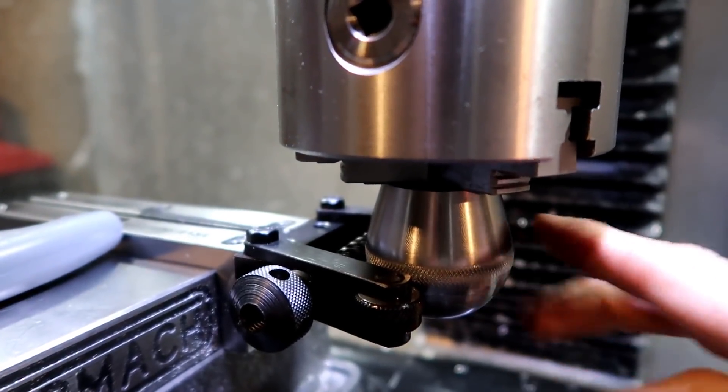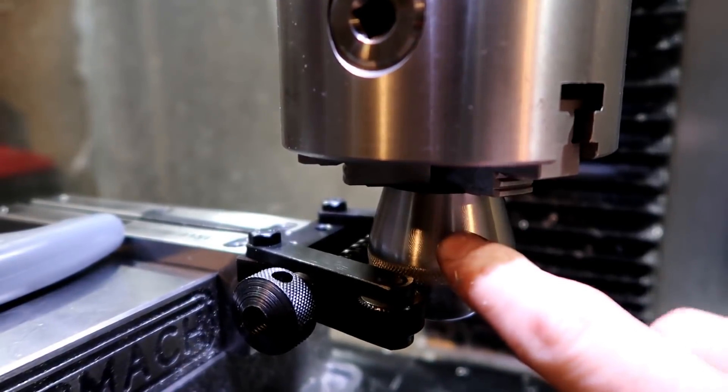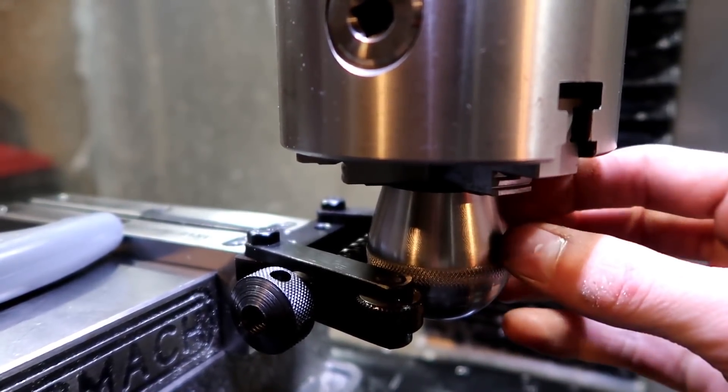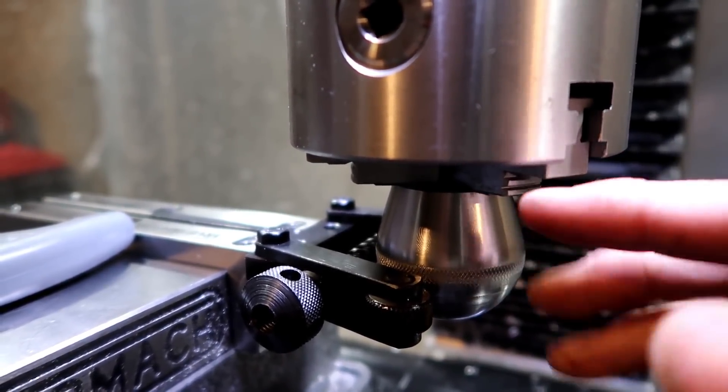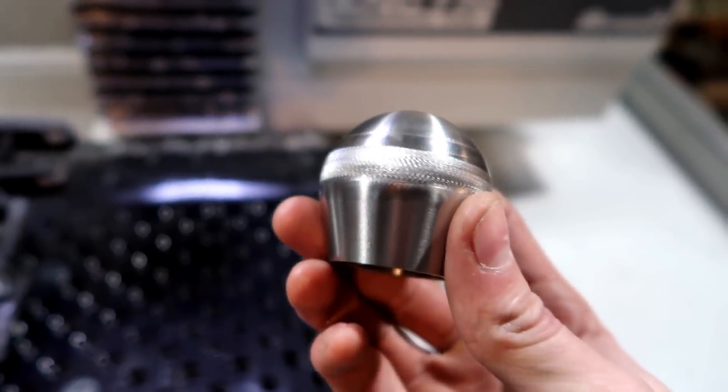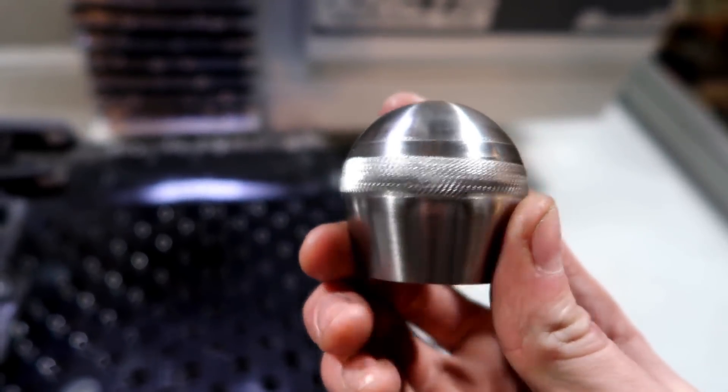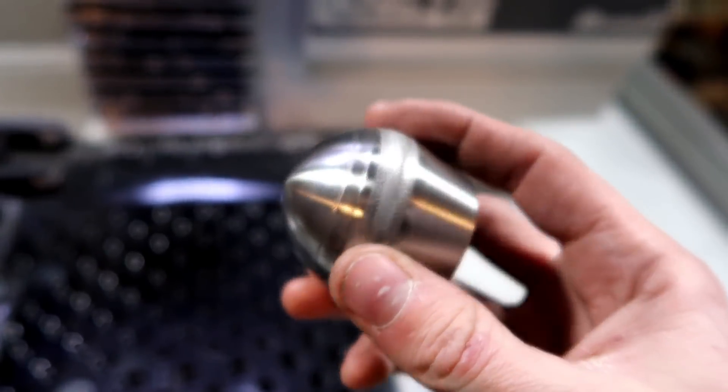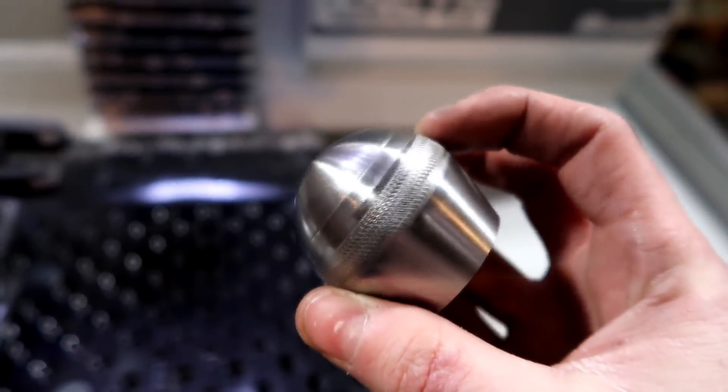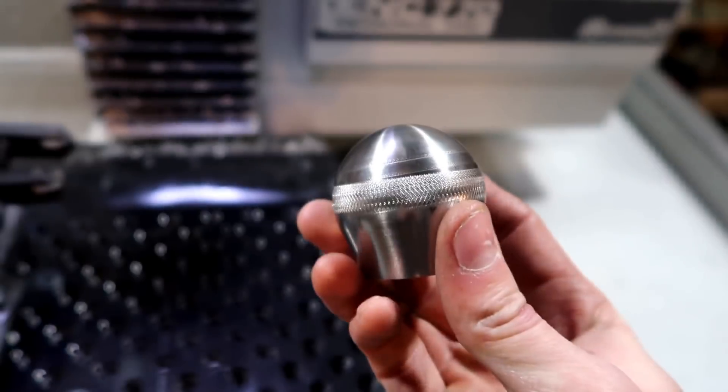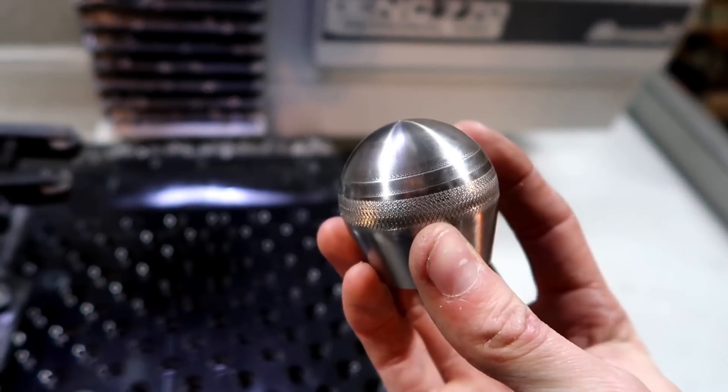When I do the other one, I'm going to take the indicator and make sure this is perfectly concentric. So here is the knurl on the test piece. Mind you, this is 303 stainless steel, so it's rather hard, and it turned out lopsided. Hopefully that doesn't happen with this one because that would just be unfortunate.